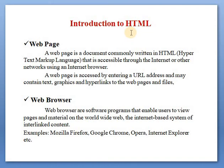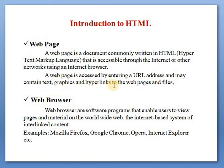What is a web page? A web page is a document commonly written in HTML — Hypertext Markup Language — that is accessible through the internet or other networks using an internet browser. A web page is accessible by entering a URL address and may contain text, graphics, and hyperlinks. URL stands for Uniform Resource Locator.